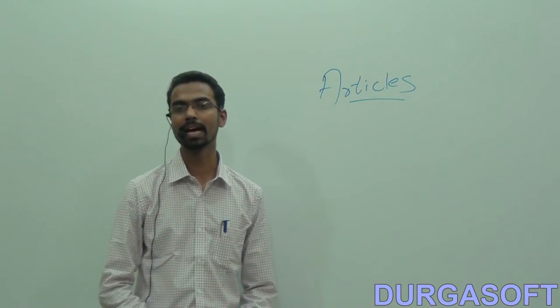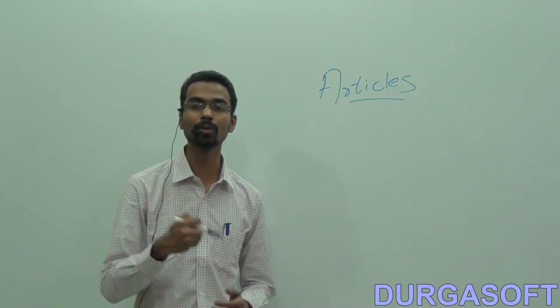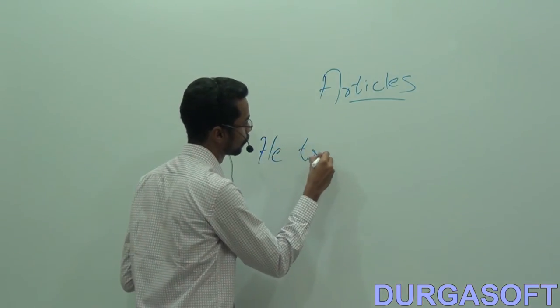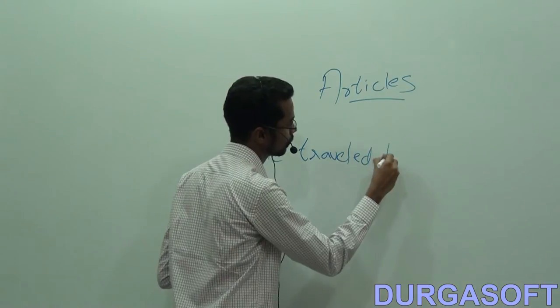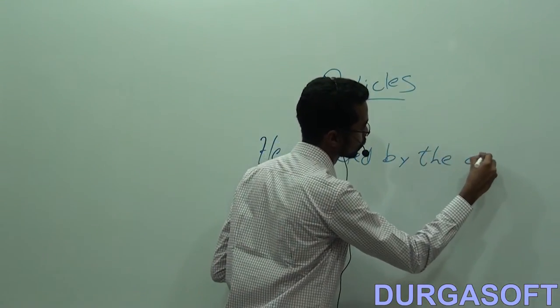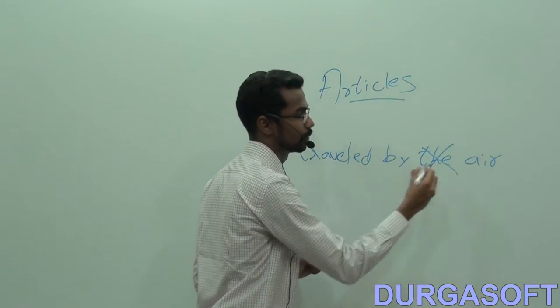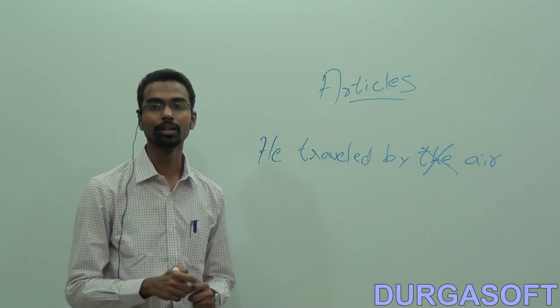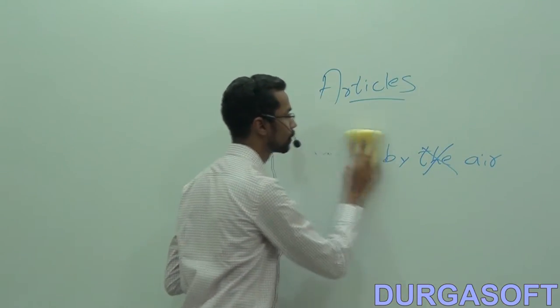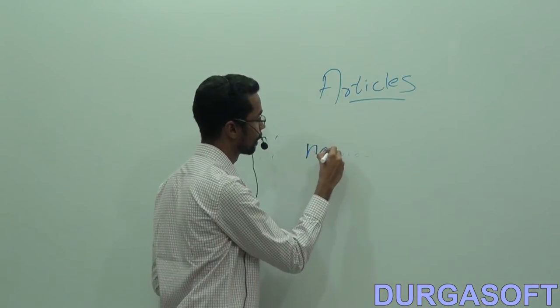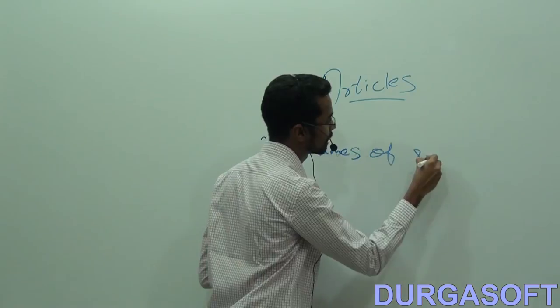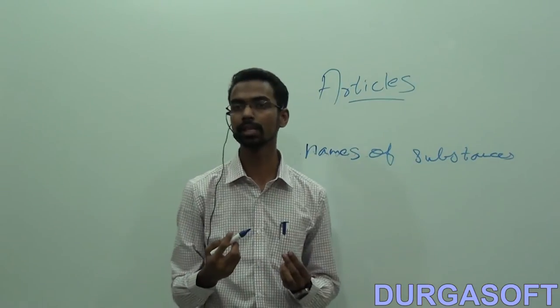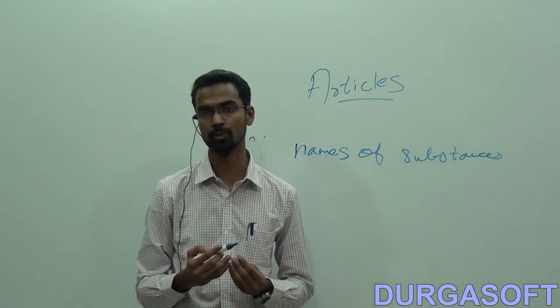Friends, you should also remember that the definite article is not used before modes of travel. You don't say, he travelled by the air. You say, he travelled by air, he travelled by road or he travelled by train. Similarly, you don't use the definite article before names of substances like gold or silver. You don't say, this spoon is made of the gold.